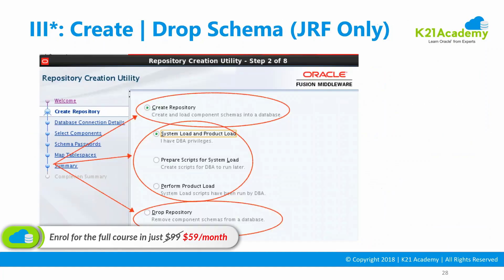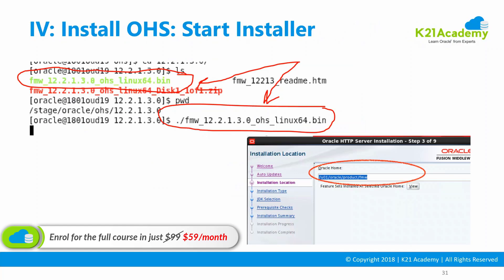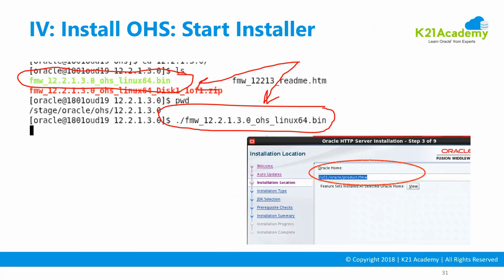You go and start the installer — the software will already be available on the membership portal. If you want to download it for your own practice, instructions are provided on how to download the 12c software from e-delivery. If you're part of Oracle Fusion Middleware training or Oracle Access Manager training, you'll get instructions in the activity guide; if you're doing practice on our servers, it's already there for you.